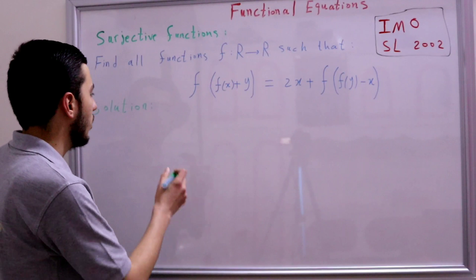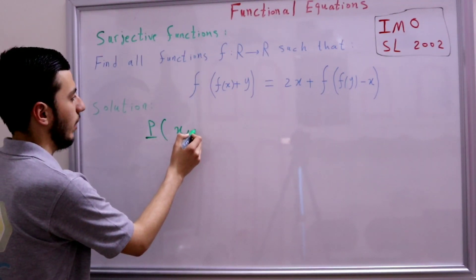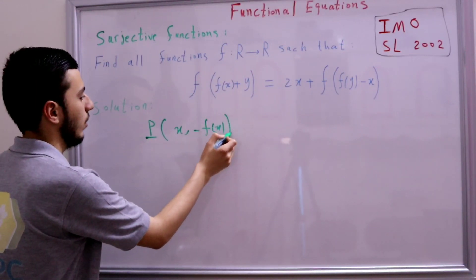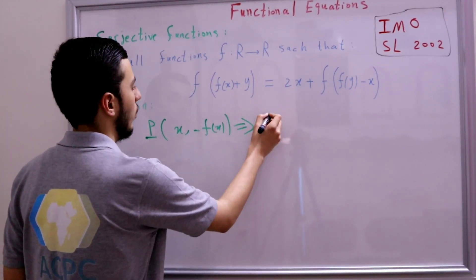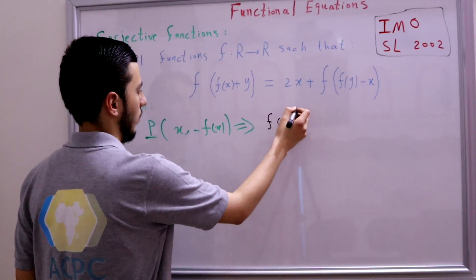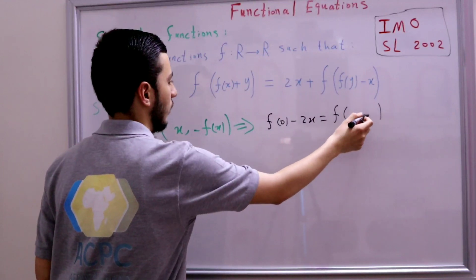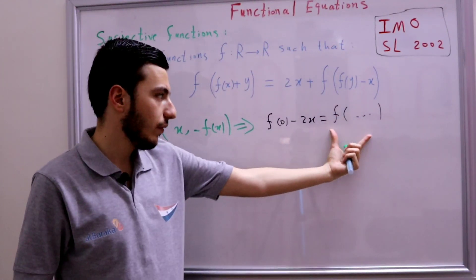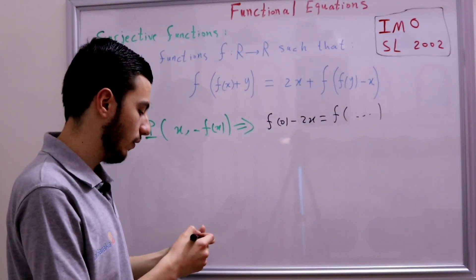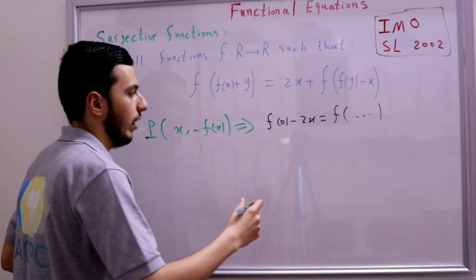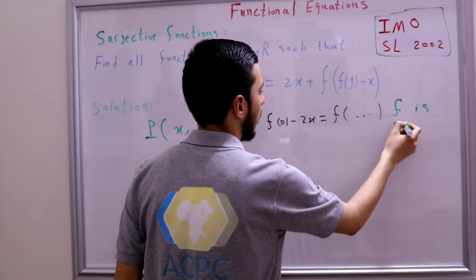Substituting y = -f(x) gives us f(0) - 2x = f(something). We have f of something equals a surjective quantity, and thus our function f is surjective.